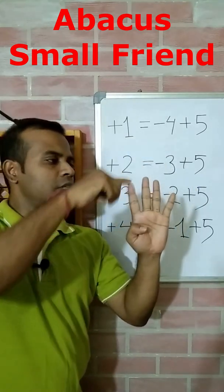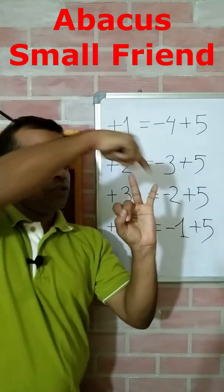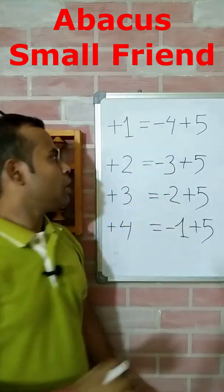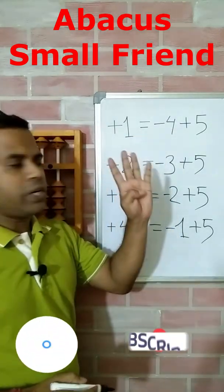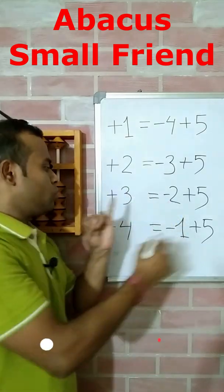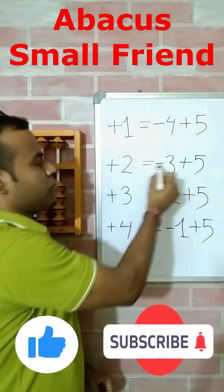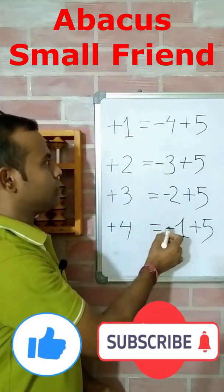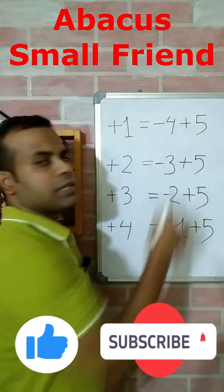One's friend is four, two's friend is three, three's friend is two, and four's friend is one. Similarly, for plus: plus one's friend is minus four, plus two's friend is minus three, plus three's friend is minus two, plus four's friend is minus one. And if there is minus, then the next one is plus, with a total friend of five.